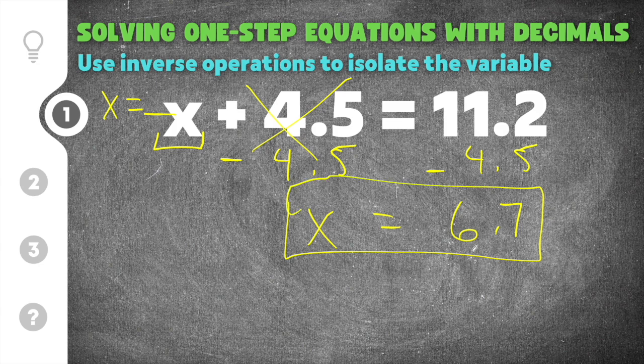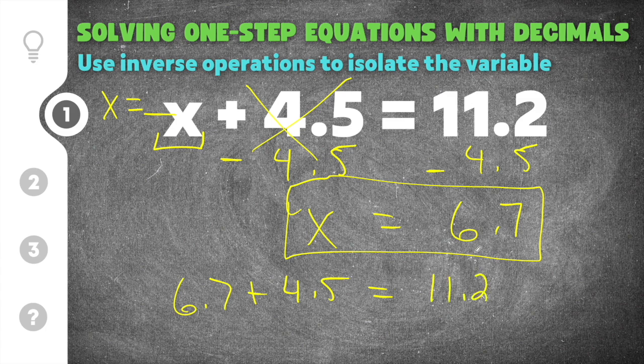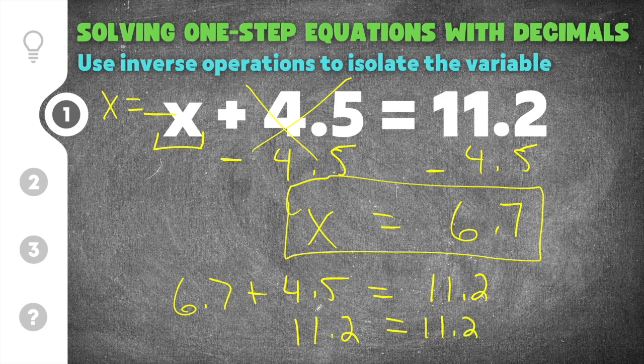Now you can check this solution by taking 6.7 and putting it in for x. So we're going to take 6.7 and put it where x used to be. So we're going to say 6.7 plus 4.5 equals 11.2. So the rest of the equation comes down. Then we do 6.7 plus 4.5. That is 11.2 and on this side we have 11.2. So this is a true statement. So 11.2 equals 11.2. That is true. So I know that our solution of 6.7 has to be correct.